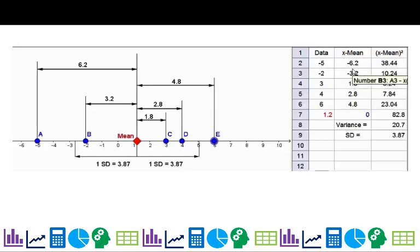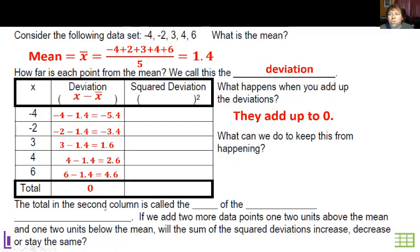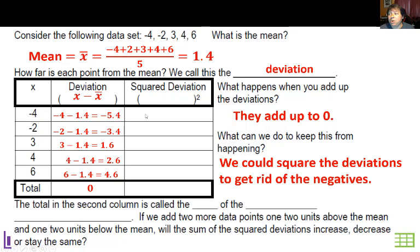So how can I make this not add up to zero? I could square them. Which brings us to let's go ahead and square the deviations.